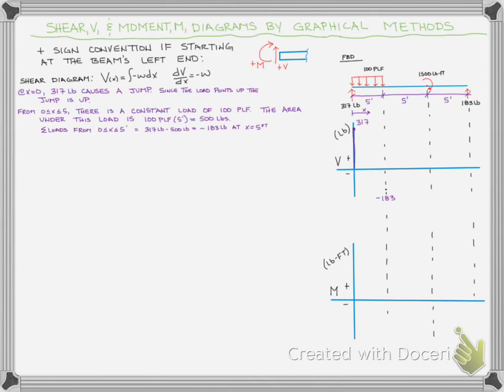Now we have to figure out how do we get from the 317 down to the negative 183 — is it a straight line, a curved line? Let's look at our load. Our load is constant. According to our mathematical relationship, if our load is constant, it means our slope is constant, which would be a straight line. So now we have a straight line down to the negative 183.